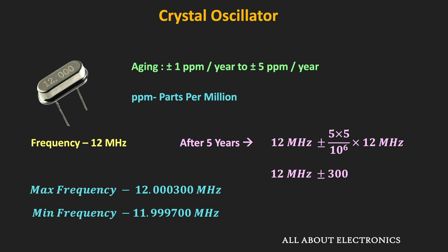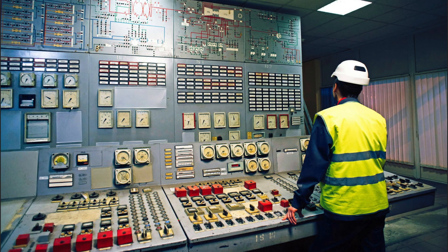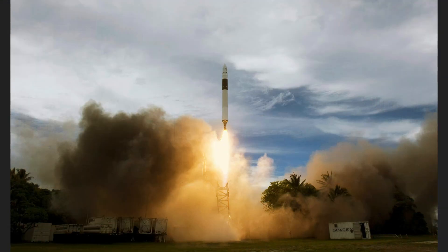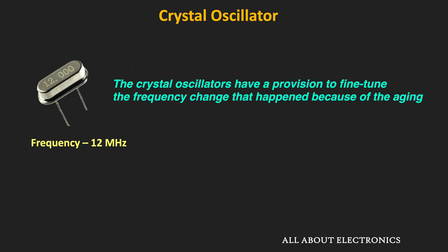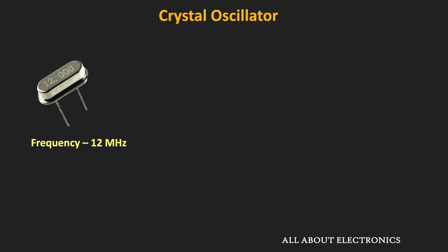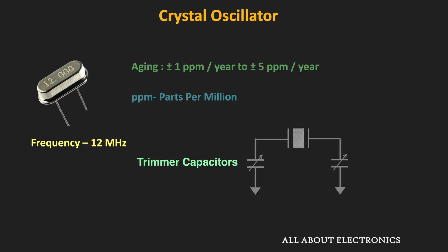For some applications, this change in frequency may not make much difference. But certain applications — like precise instrumentation and space and military applications — demand a high level of stability. To fine-tune the frequency due to aging, some crystal oscillators have a provision to tune the frequency, using an additional trimmer capacitor. This allows the frequency error introduced by aging to be compensated.